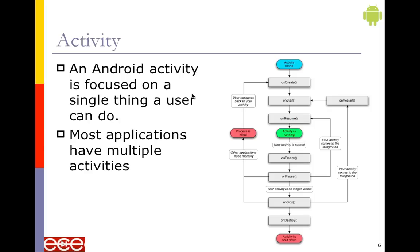This is the basic concept that was part of the first assignment — focusing on the activity and the life cycle of the object. The Android activity is focused on a single thing a user can do. We have single activities and multiple activity classes per project. We don't have to have just one — a lot of people think there's just one activity, but you can have many. Most applications have multiple activities.